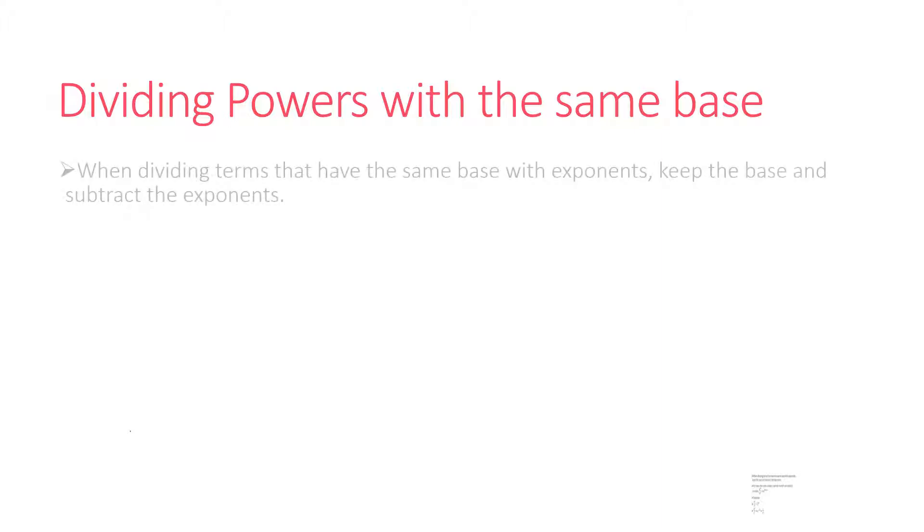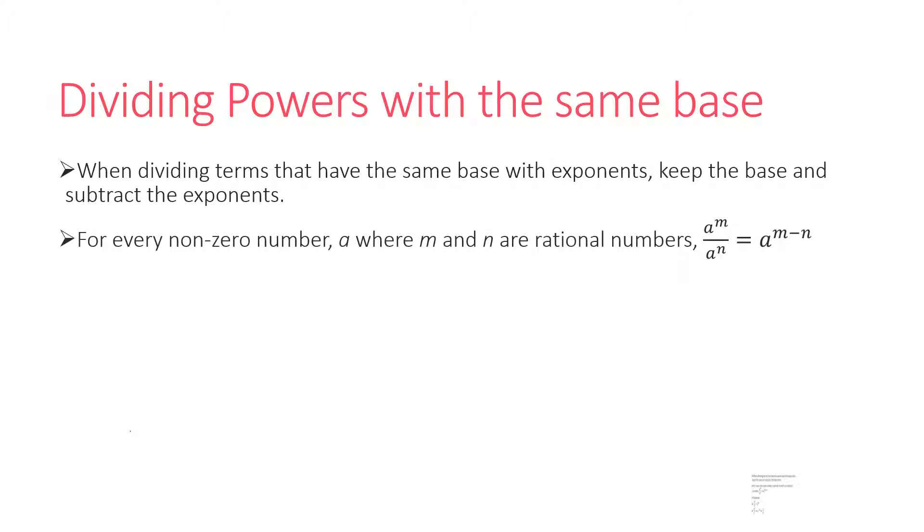So when you divide powers with the same base, you're going to keep the base and you're going to subtract the exponents. The formal definition is as follows: for every non-zero number a, where m and n are rational numbers, a to the m over a to the n is equal to a to the m minus n power.